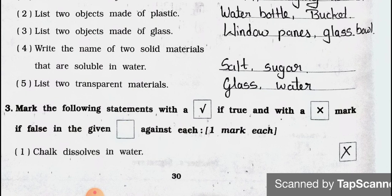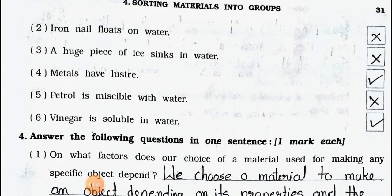Now see Main 3. Mark the following statements with a right if true and a wrong mark if false. Number 1: Chalk dissolves in water — Wrong, false. Number 2: Iron nail floats on water — Wrong, false. Number 3: A huge piece of ice sinks in water — Wrong, false, because ice floats on water. Number 4: Metals have a luster — Right. Number 5: Petrol is miscible with water — Wrong, false. Number 6: Vinegar is soluble in water — Right.